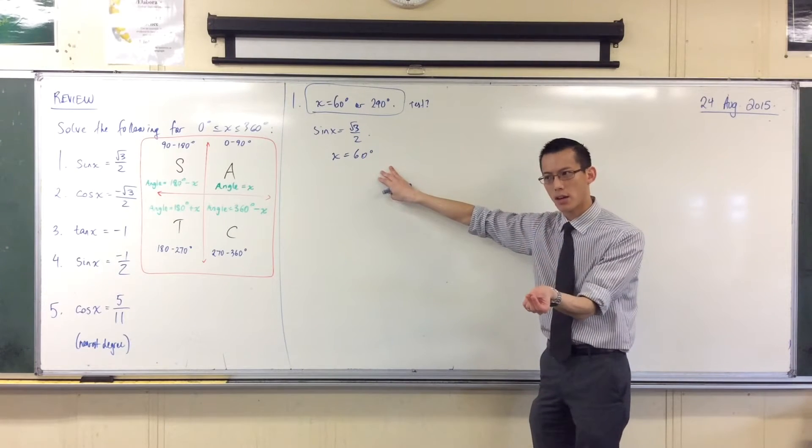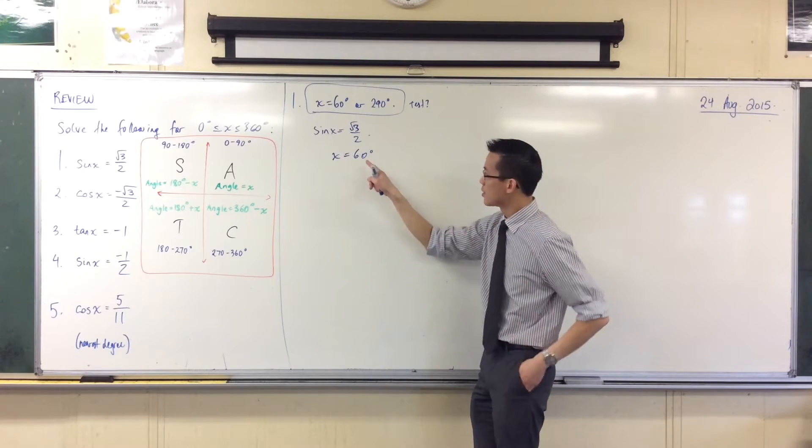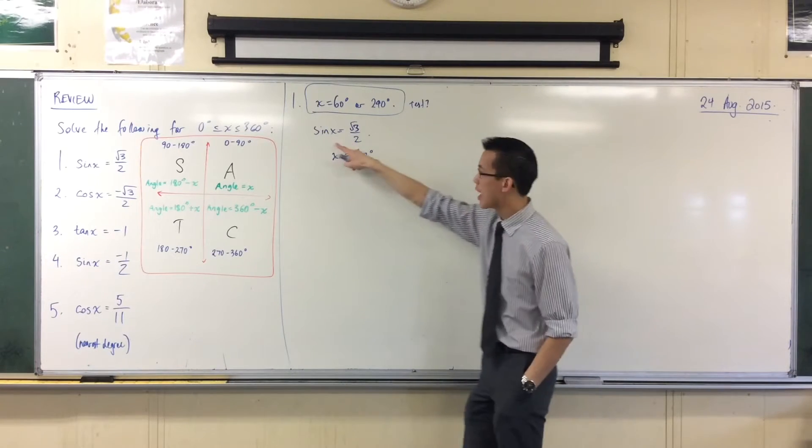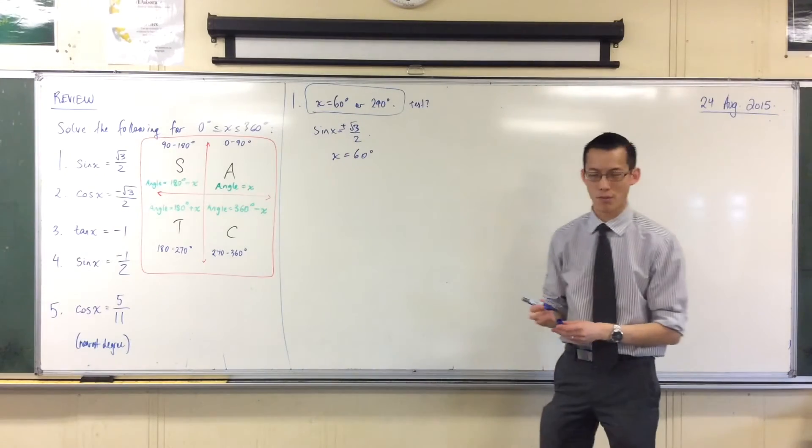Then you need to ask the question, what will the other one be? Or others, right? Sometimes there can be more than another one. So I'm going to take this angle and I'm going to recognize that sine is positive. See that? There's a plus sign just hiding there because we don't need to write it.